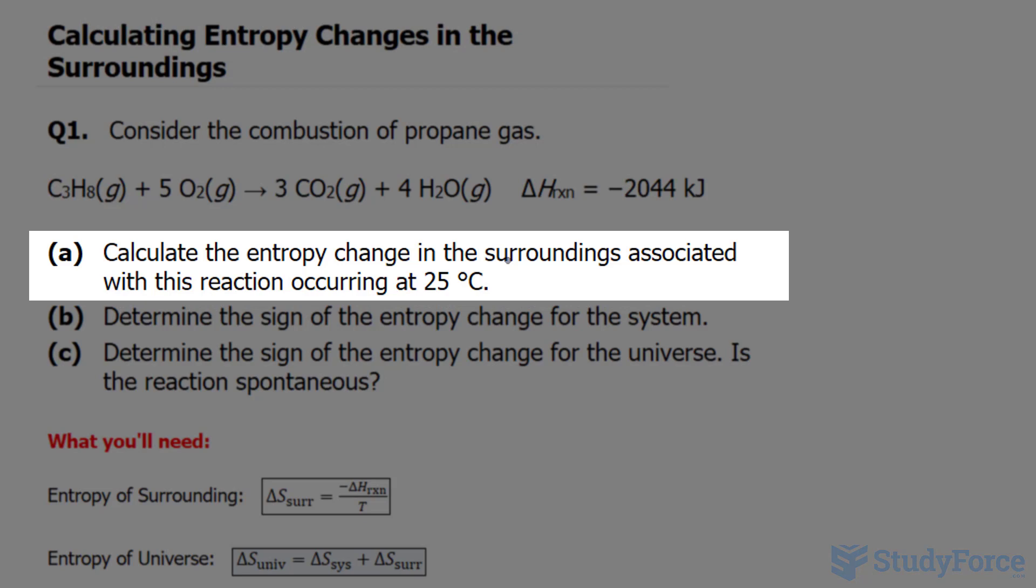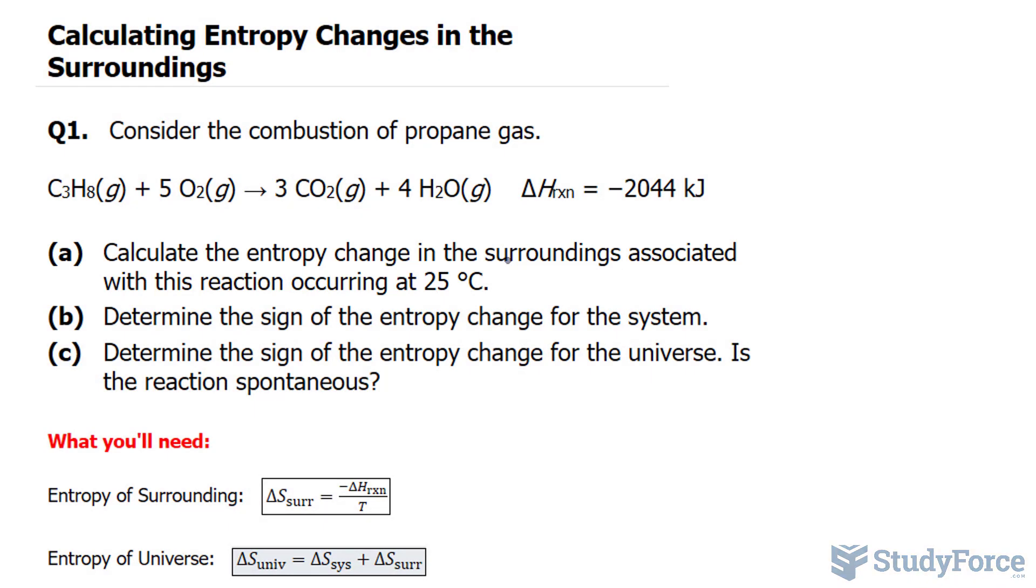We're expected to first calculate the entropy change in the surroundings associated with this reaction occurring at 25 degrees Celsius. So, focusing in on question A, the first thing that I want to do is change 25 degrees Celsius into its equivalent in Kelvin.